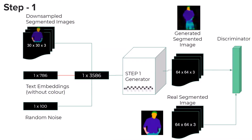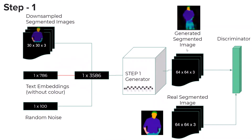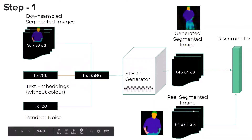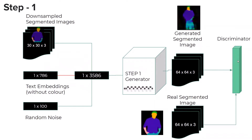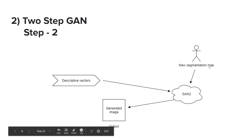Moving to our proposed approach — here is step one of the model, which deals with Generator 1. We have segmented images obtained from the self-correction human parser, textual embeddings created using BERT, and Gaussian random noise. These are concatenated into a vector and fed to the generator, which produces the required segmented images. After the discriminator and generator complete training, we obtain the final generated segmentation image. Step two then takes this new generated segmentation map along with the descriptive vectors and provides the final output.